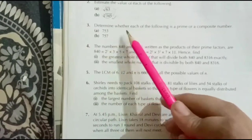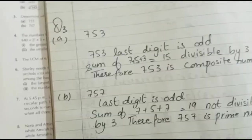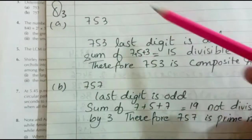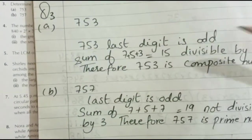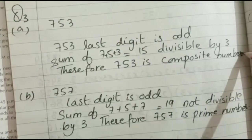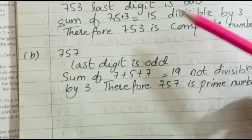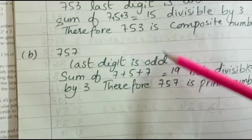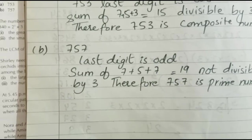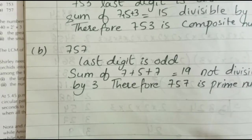Question number 3: determine whether each of the following is a prime number or a composite number. For 753, the last digit is odd, but the sum of digits is 15, which is divisible by 3, so it is a composite number. For 757, the last digit is odd and the sum of digits is 19, which is not divisible by 2, 3, or 5, so it is a prime number.